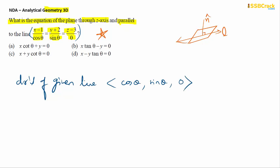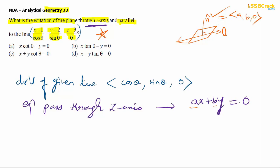We have to find the equation of the plane passing through z-axis and parallel to the line. The direction ratios of the given line are cos θ, sin θ, 0. When the plane passes through the z-axis, the standard form is ax + by = 0. The direction ratios of the normal to this plane are a, b, 0.